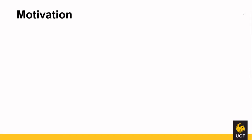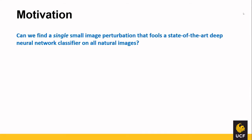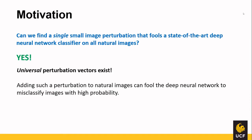Let's talk about the motivation. Previously, the computation of an adversarial perturbation for a new data point required solving a data-dependent optimization problem or a gradient computation. But the question is: can we find a single small image perturbation that fools a state-of-the-art deep neural network classifier on all images? The authors say yes, and they prove it in this paper. They claim that universal perturbation vectors exist, and adding such a perturbation to natural images can fool neural networks with high probability of misclassification.